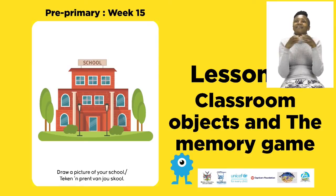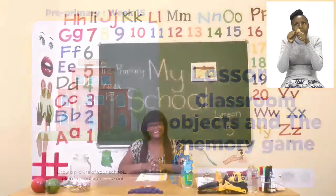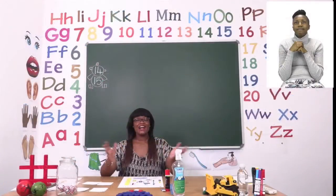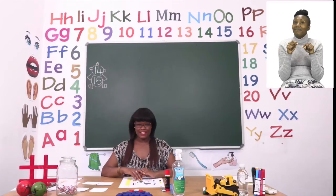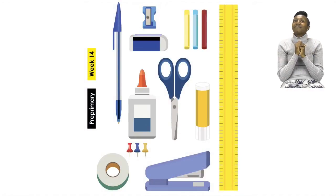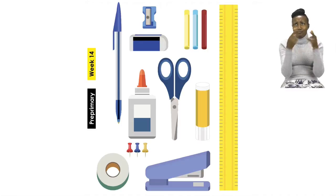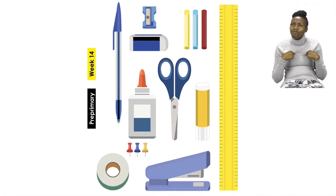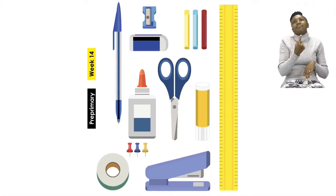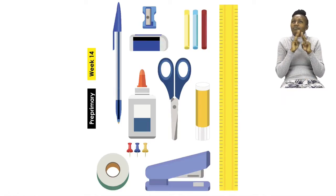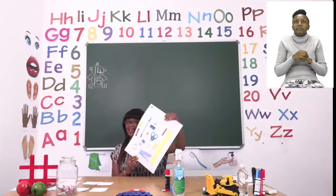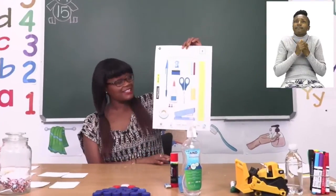For today's lesson we will be talking about classroom objects and the memory game. Now boys and girls we are going to start our lesson by going to page 14. On page 14 we have so many things we find in the classroom. But our job is to circle all the dangerous objects in the classroom, so let's discuss each one. I have the same paper as you do and we're going to talk about each and every object.